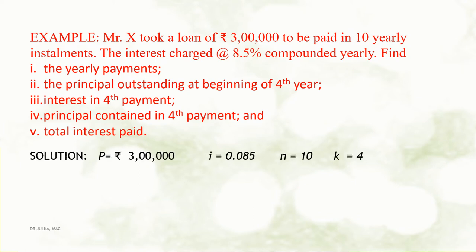In this example, loan amount is Rs 3 lakh, so the value of P which denotes present value is Rs 3 lakh. Interest rate is 8.5% compounded yearly, so i equals 0.085, and the number of years are 10, so n equals 10. We want to calculate principal outstanding at the beginning of the 4th year, so k equals 4.